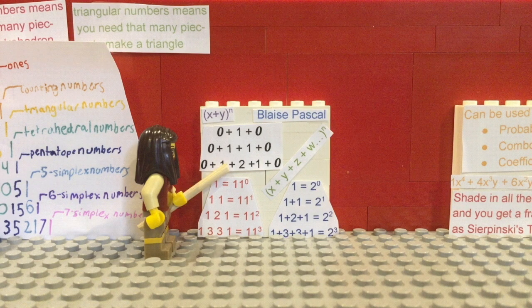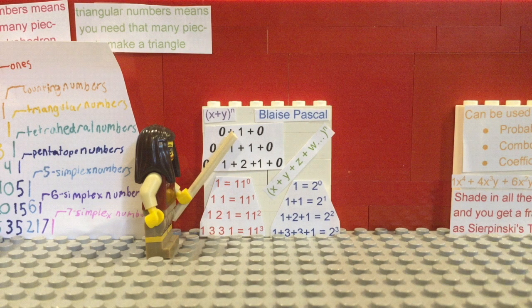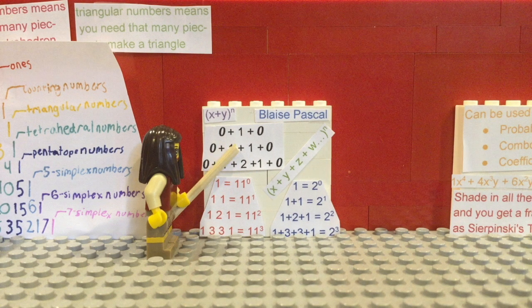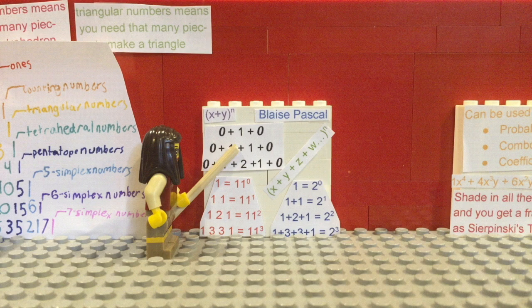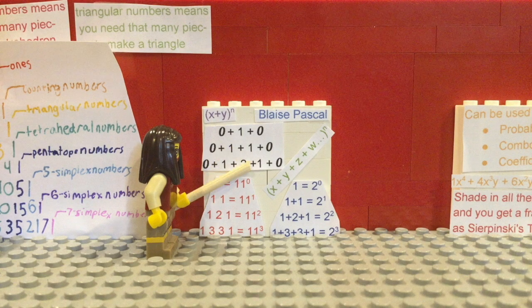This is how Pascal's Triangle works. Imagine zeros at the end. Add 0 plus 1 and 1 plus 0 to get 1, 1. Add 0 plus 1 and 1 plus 1 and 1 plus 0 to get 1, 2, 1.